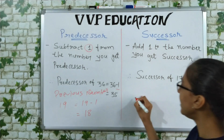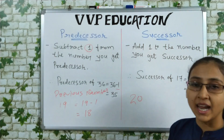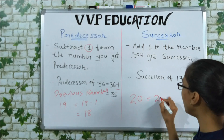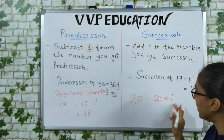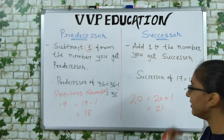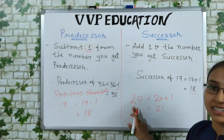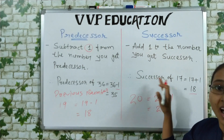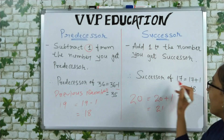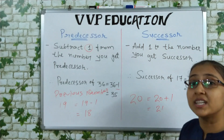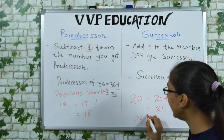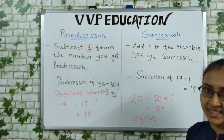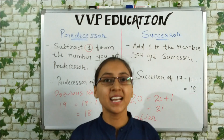Let's take another example. Suppose I have number 20 and I have to find the successor of 20. So what I will do is 20 plus 1, which gives 21. So 21 is the successor of 20. In short, successor means the number after that number — whatever comes after on the number line is the successor.